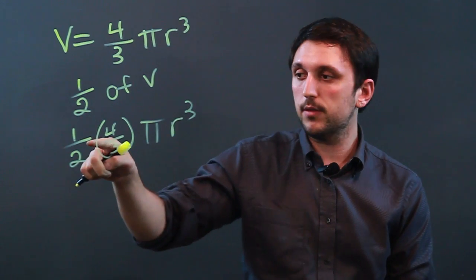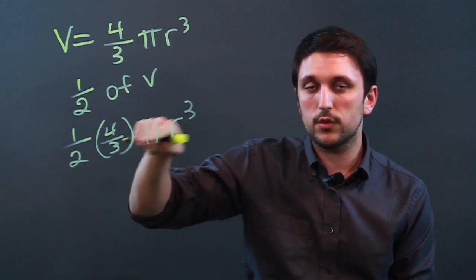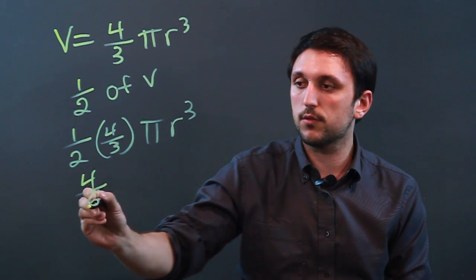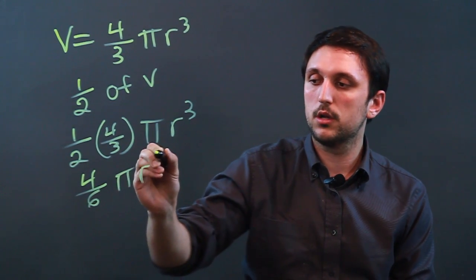And in this case, we basically multiply these two first and then just proceed with our equation. One-half times four-thirds is four-sixths pi r cubed.